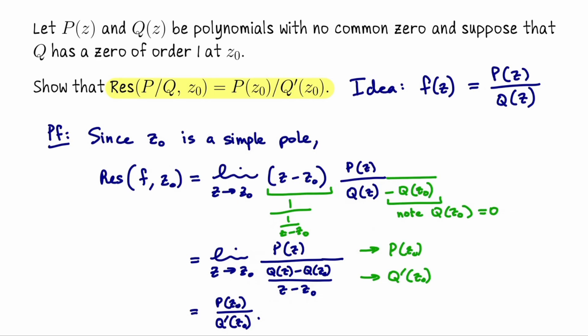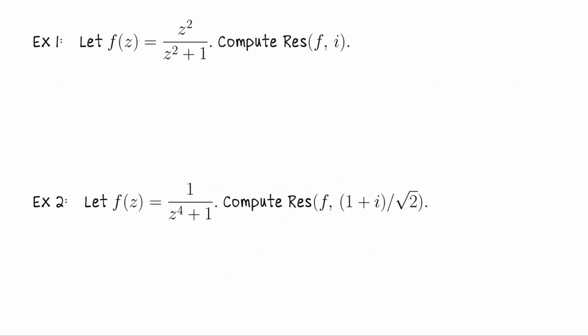To try to convince you that this is actually useful, let me take you through two examples. In our first example, the function f of z is z squared over z squared plus 1. So here P of z is z squared and Q of z is z squared plus 1.